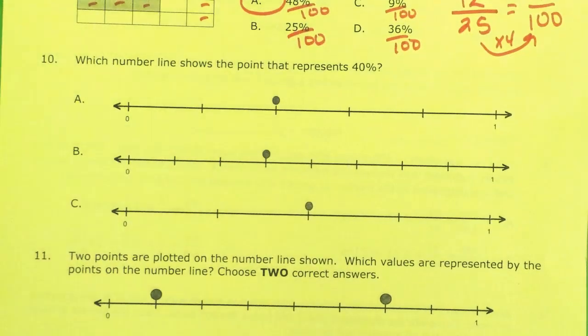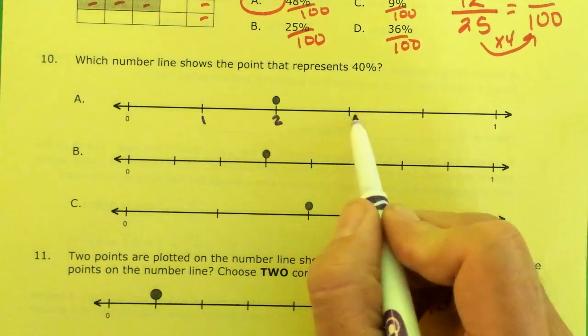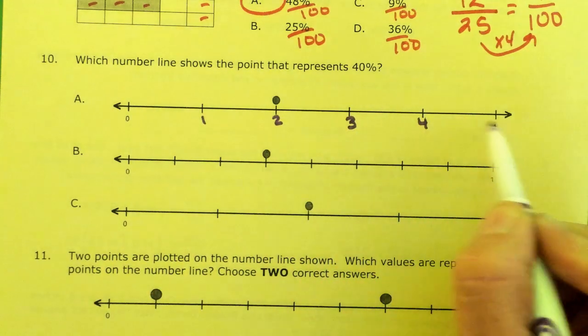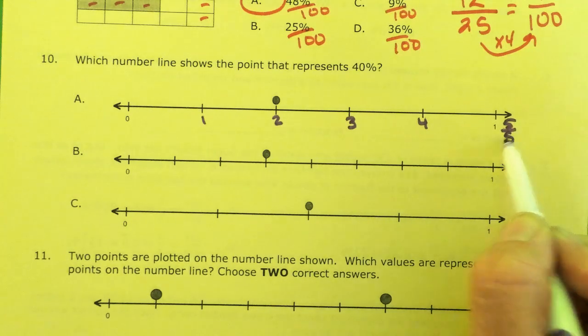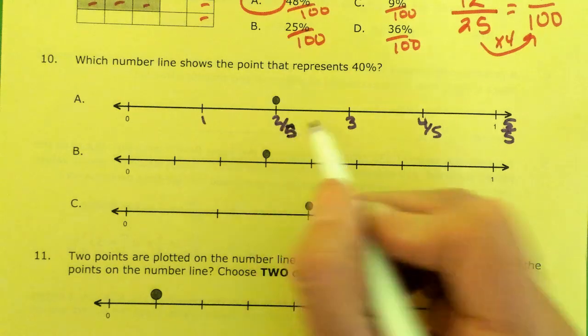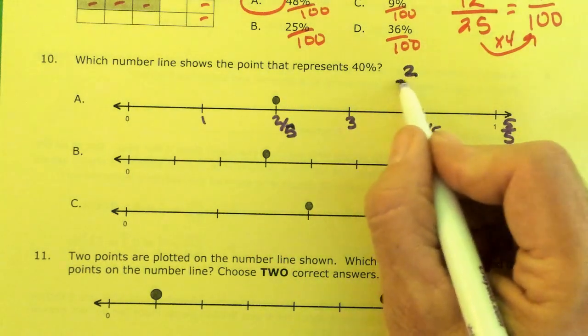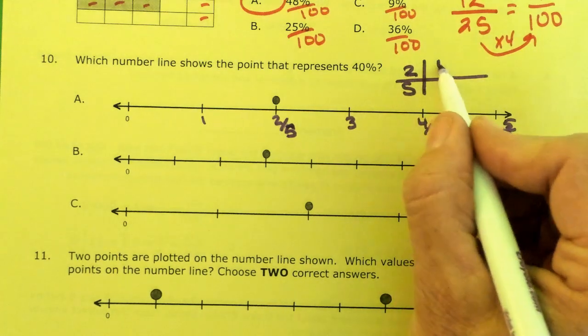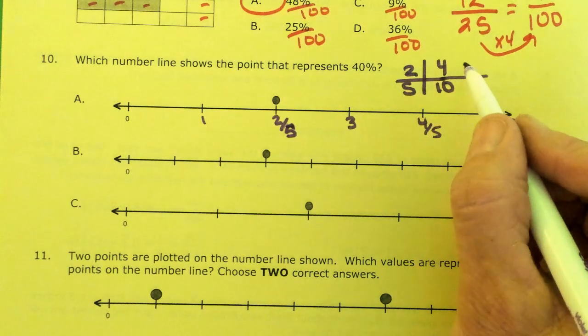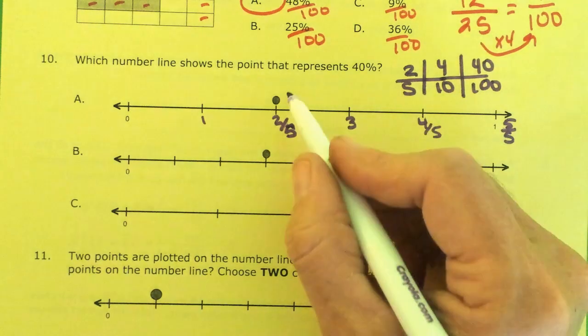Number 10. Which number line represents 40 percent? The key to number lines is to know how many little spaces are there. If this is 0, this would be 1, 2, 3, 4, and this is 5 out of 5. So this would be 4 out of 5, 3 out of 5. This would be 2 out of 5. Is 2 out of 5 40 percent?